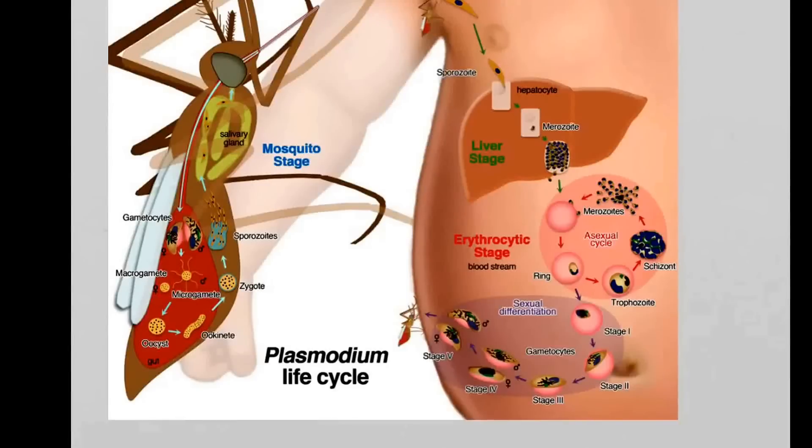Here in the mosquito, in the mosquito gut, there are the right conditions for these male and female cells to fuse together. They form what is called an oocyst. This oocyst grows into an ookinete, forming a zygote. A zygote is simply a male and a female cell fused together.